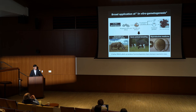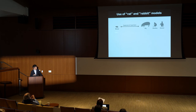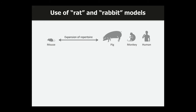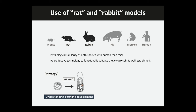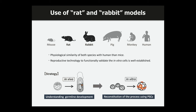So far, PGCLCs that have produced functional gametes have only been reported in mice, so there is a huge gap between the mouse model and other mammals. To fill this gap, we have recently focused on two models — rat and rabbit — which are physiologically more similar to humans than mice. An advantage is that reproductive technology to functionally validate in vitro cells is well established in these species. Our strategy is to first understand germline development in vivo and then reconstitute the process using pluripotent stem cells in vitro.